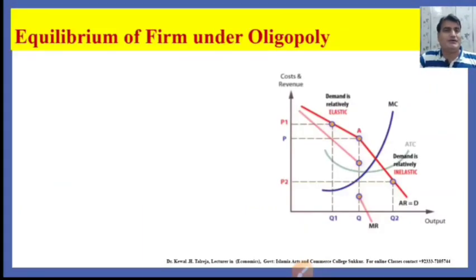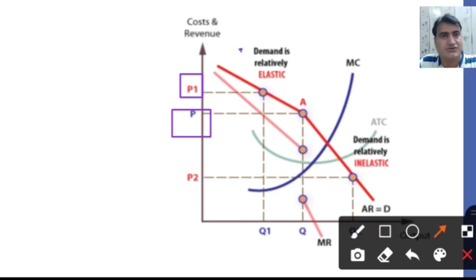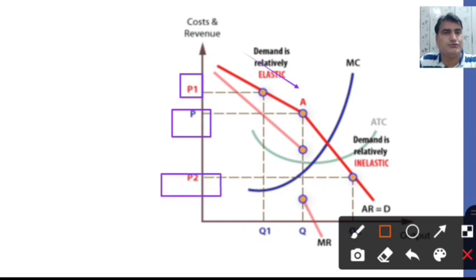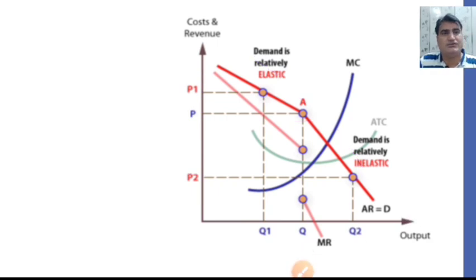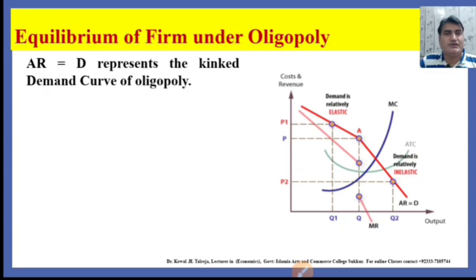This is the equilibrium of the firm under oligopoly. If the market clearing price is OP and the firm decides to charge price P1, the elasticity is higher at this point because customers will move towards rival firms and purchase the same product from them — demand is relatively elastic. If the firm decides to charge price P2, this is called the kink and the demand curve, though downward sloping, shows demand is relatively inelastic. Average revenue is the demand curve of the firm and marginal revenue is the revenue of the firm. Once the kink is formed, the marginal revenue is discontinuous at that point.